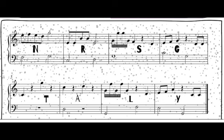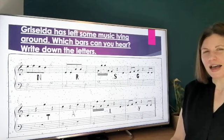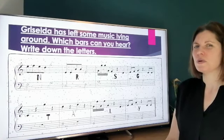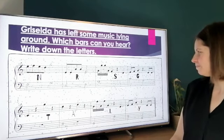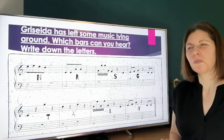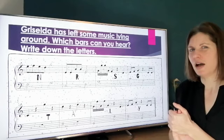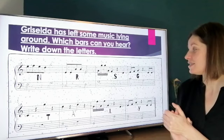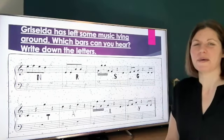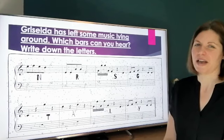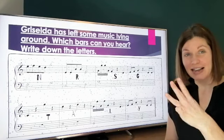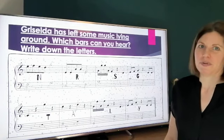Let's listen for the next bar. That had quite a few notes in it — the rhythm at the beginning of the bar was quite fast. Let's listen one more time. I think it was some semiquavers at the beginning of the bar, so listen out for semiquavers and see if you can work out which one of our bars it was. Write down the letter of the corresponding bar. We should have three letters now. Are you ready for number four?